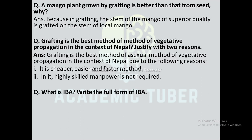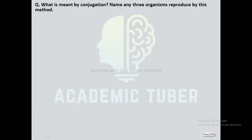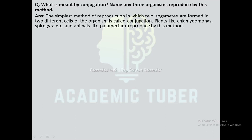What is IBA hormone? What is the full form of IBA? The rooting hormone which is used to encourage the growth of roots is called IBA hormone. The full form of IBA is indole-3-butyric acid. What is meant by conjugation? Name any three organisms reproduced by this method. The simplest method of reproduction in which two isogametes are formed in two different cells of the organism is called conjugation. Plants like Chlamydomonas, Spirogyra, etc. and animals like Paramecium reproduce by this method.